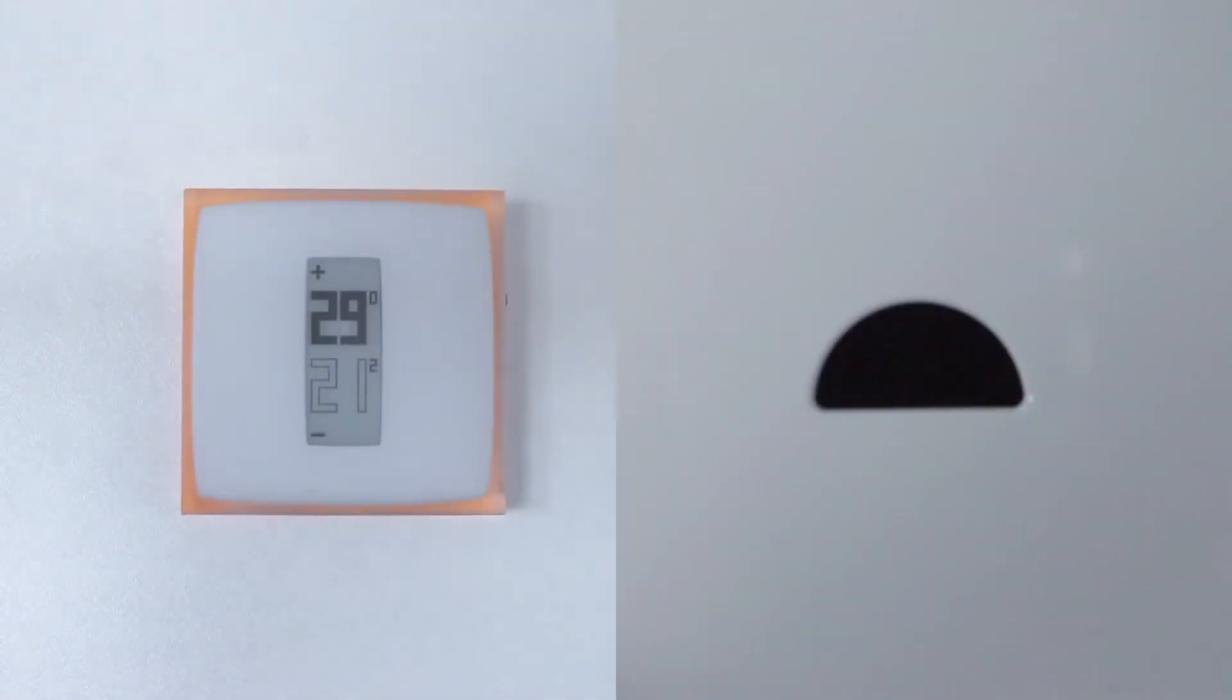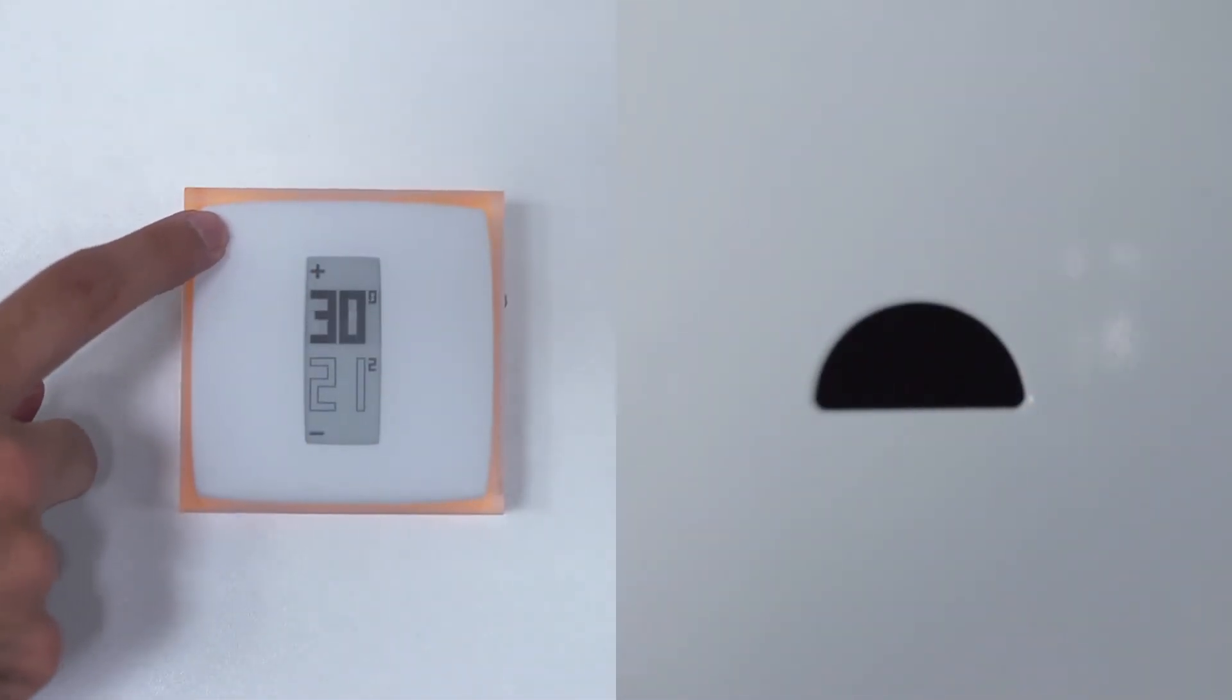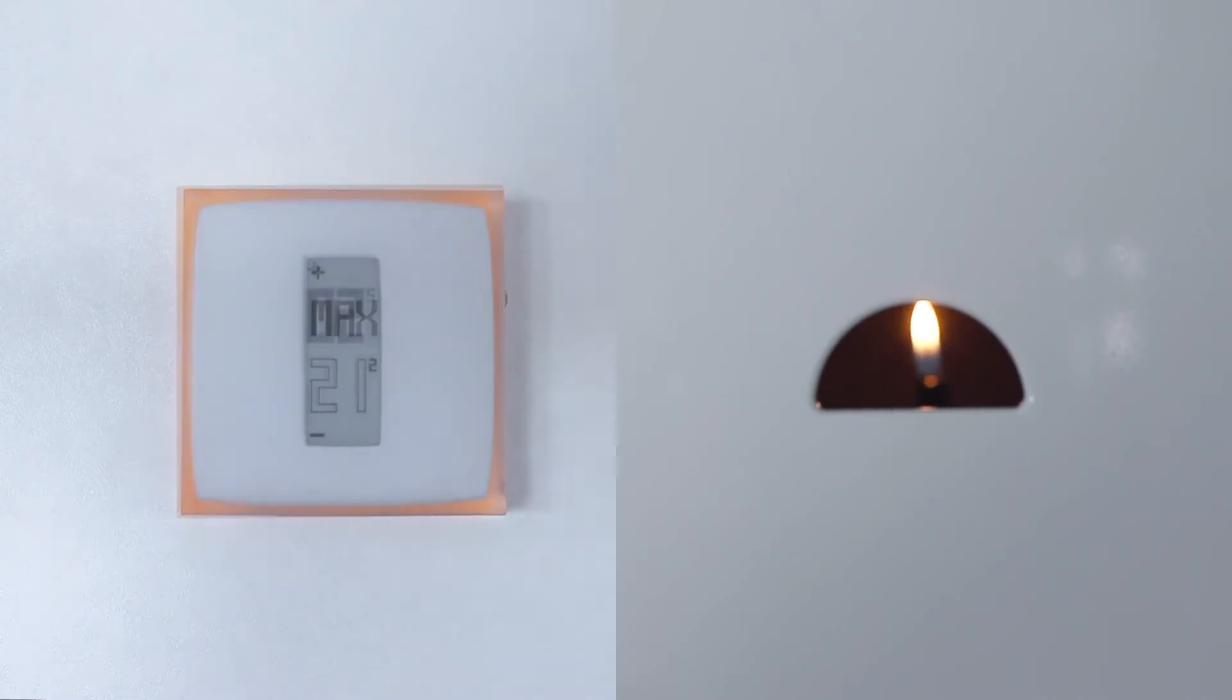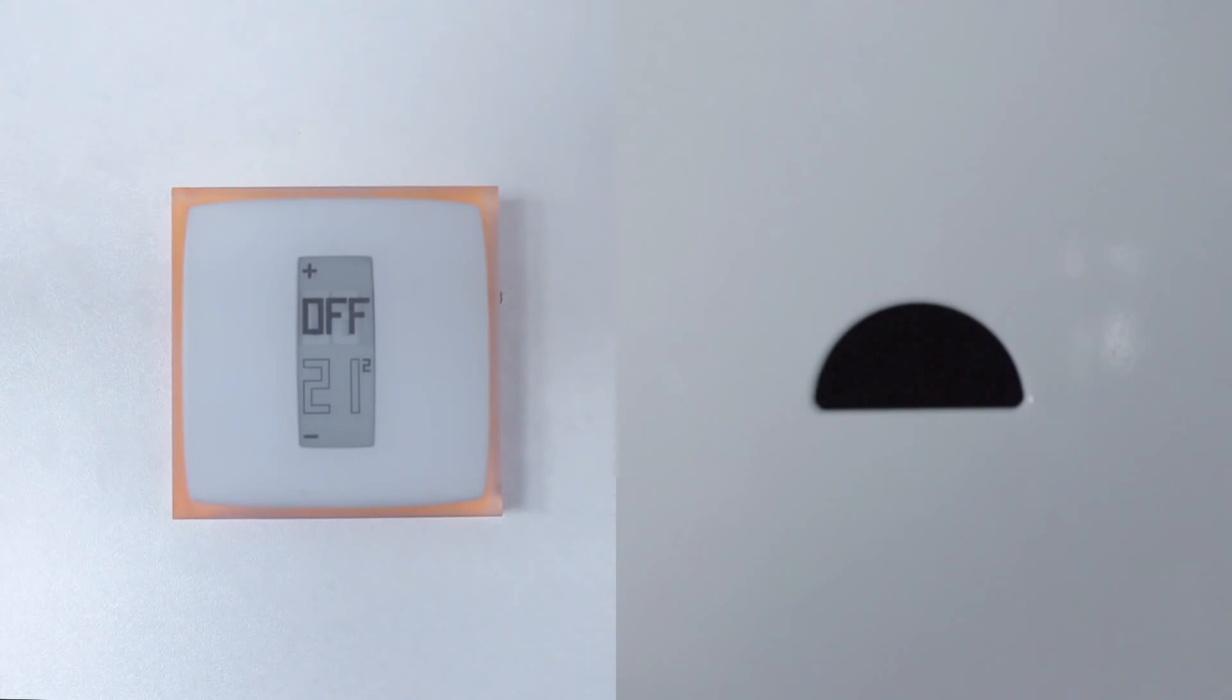Push down on the top of the thermostat until it says Max. The boiler will turn on. Push down on the bottom of the thermostat until it displays off. The boiler will turn off.